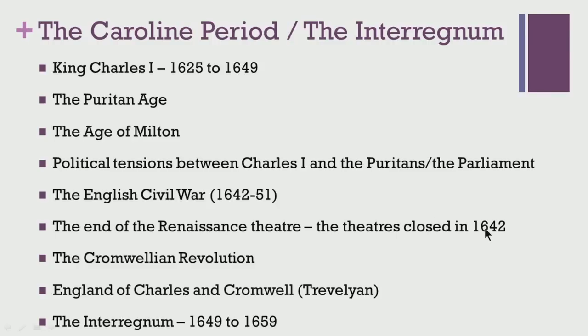The theatres were closed in 1642 with the beginning of the Civil War, marking the death knell of Elizabethan and Jacobean theatre. We also see the Cromwellian revolution that follows. Trevelyan rightly describes this period as 'the England of Charles and Cromwell.' The period that followed was known as the Interregnum, from 1649 to 1659. This was a quite turbulent period, and many of these political, social, and religious events had lasting implications not just on literary phases of England, but also on how the state itself came to be conceived in the following decades and centuries.